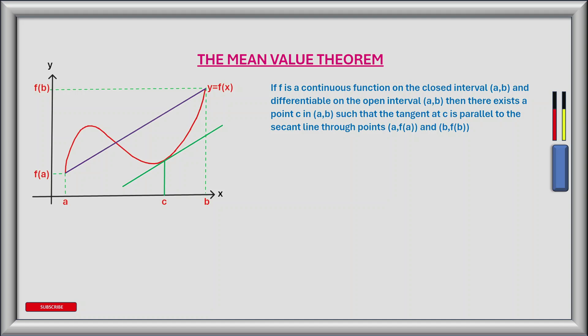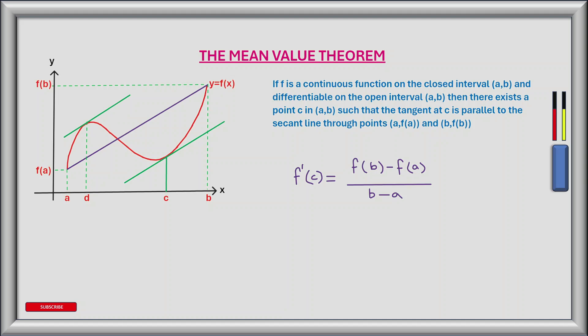So assuming that our function meets the conditions set out in the theorem — and our function on the left does — then the following is true. The derivative of f at point c on the x-axis, which is the gradient of the tangent to the curve at point c shown by the green tangent line, is equal to the gradient of the secant line, the purple line. In our case this will also be true at point d on the x-axis, where another tangent line is parallel to the secant line and falls within the interval a and b.